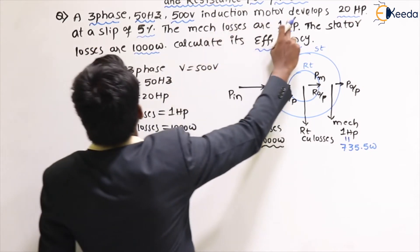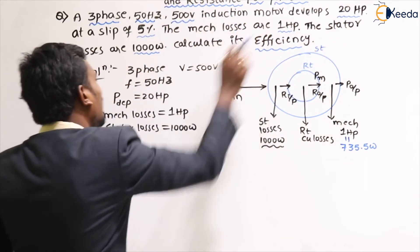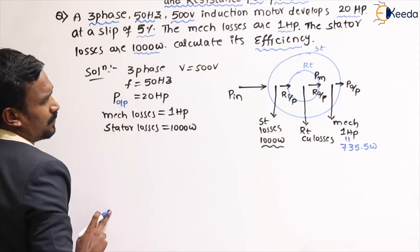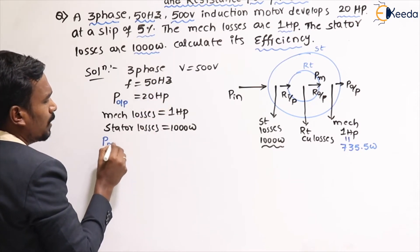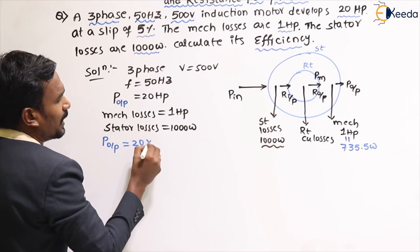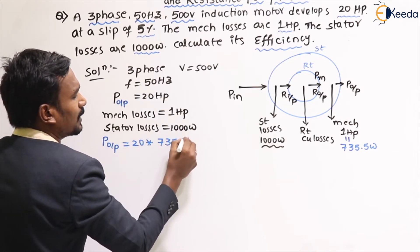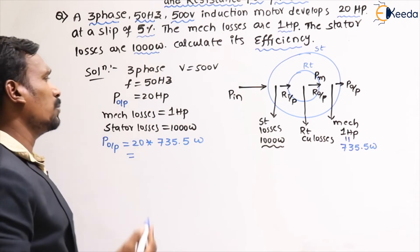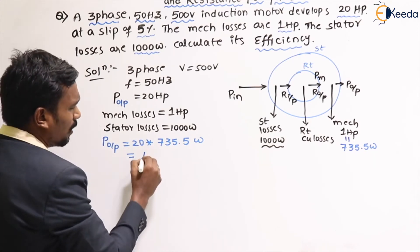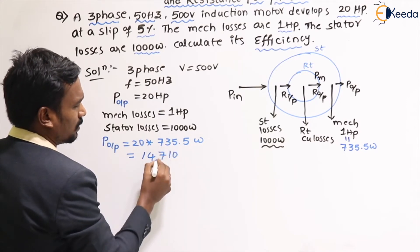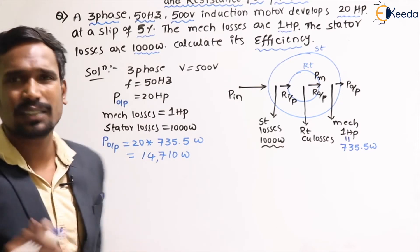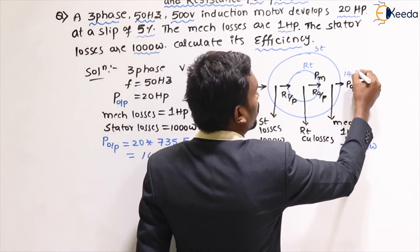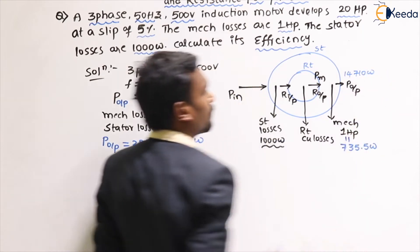The induction motor develops 20 hp — this is actually the motor output. One hp equals 735.5 watts, so the motor power output is 20 × 735.5 = 14,710 watts.